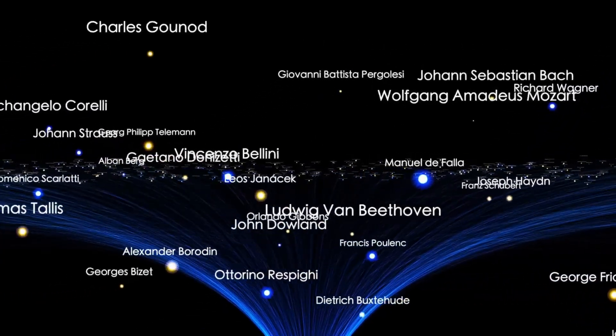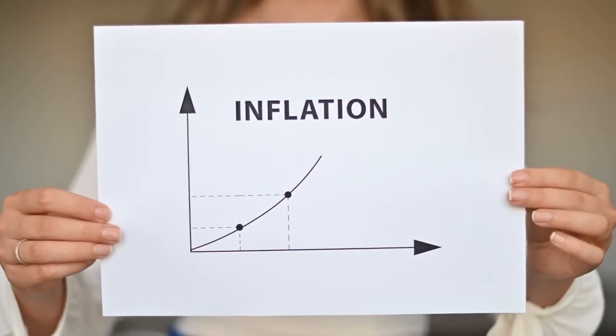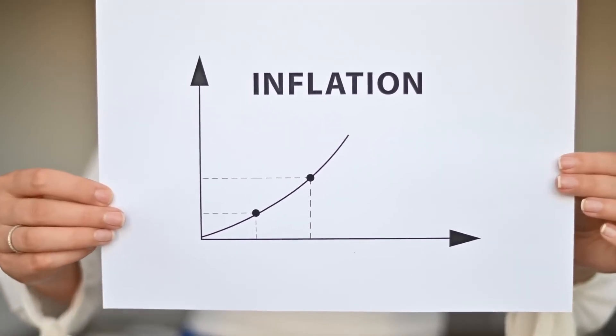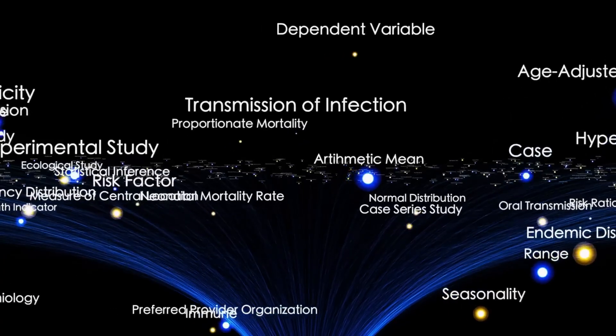As we zoom out, we discover an increasing number of mapped galaxies, though these represent only a tiny fraction of what exists. Hundreds of billions of galaxies remain uncharted, waiting to be discovered.